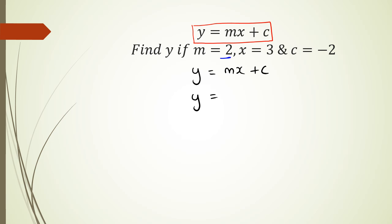What is m in this case? m is 2, so that's going to be 2. It's multiplied by x, so x in this case is 3, and then added with c. Now, c in this case is negative 2. So when we do this, we've got 2 times 3, which is 6, 6 plus negative 2. And so the answer in this case, y is equal to 4, when all of those other variables equal those various numbers.